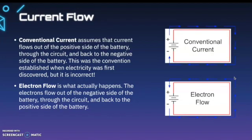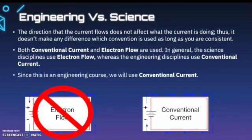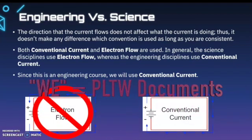Let's talk about current flow. Conventional current assumes that current flows out of the positive side of the battery, through the circuit, and back to the negative side of the battery. This was the convention established when electricity was first discovered, but it's technically incorrect. Electron flow is what actually happens — electrons flow out of the negative side of the battery, through the circuit, and back to the positive side. The direction of current flow doesn't affect what the current is doing, so it doesn't make any difference which convention is used as long as you're consistent. Science disciplines use electron flow, whereas engineering disciplines use conventional current. Since this is an engineering course, everything we'll be referencing is conventional current.